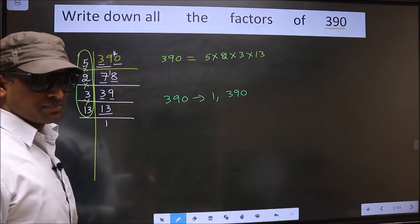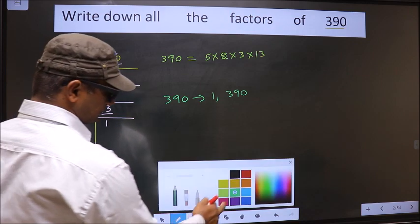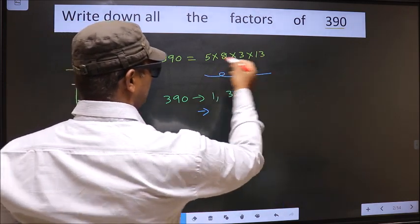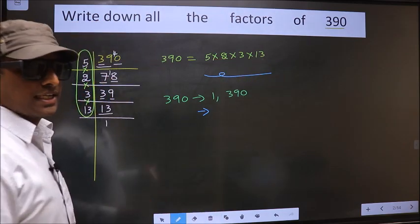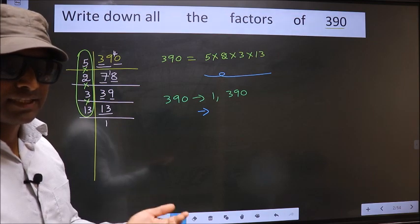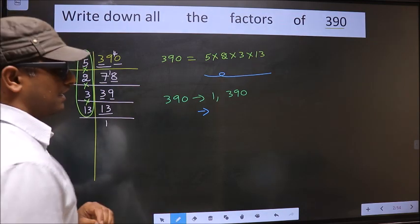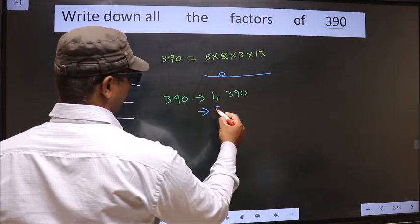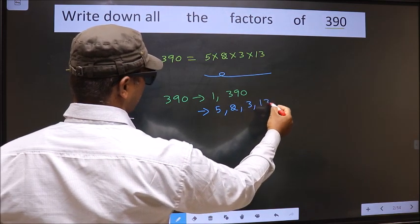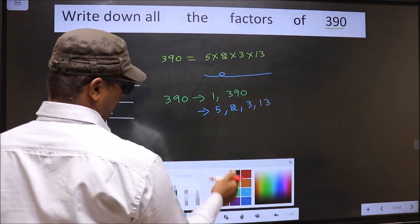Now from these numbers, you select 1 different number at a time. Like that how many numbers do we get? We get 5, 2, 3 and 13. That's it.